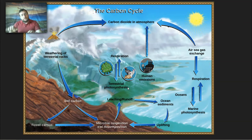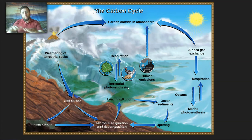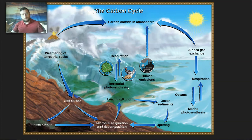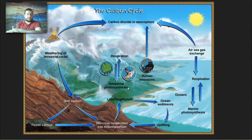During decomposition, the organisms that ate the food made by producers will dump the carbon that was still in them into the soil or the water if they die in water. Then decomposers will break that down back to carbon dioxide, which gets released to the atmosphere, or mineralize it into minerals that end up becoming part of the soil and eventually could become part of rocks.